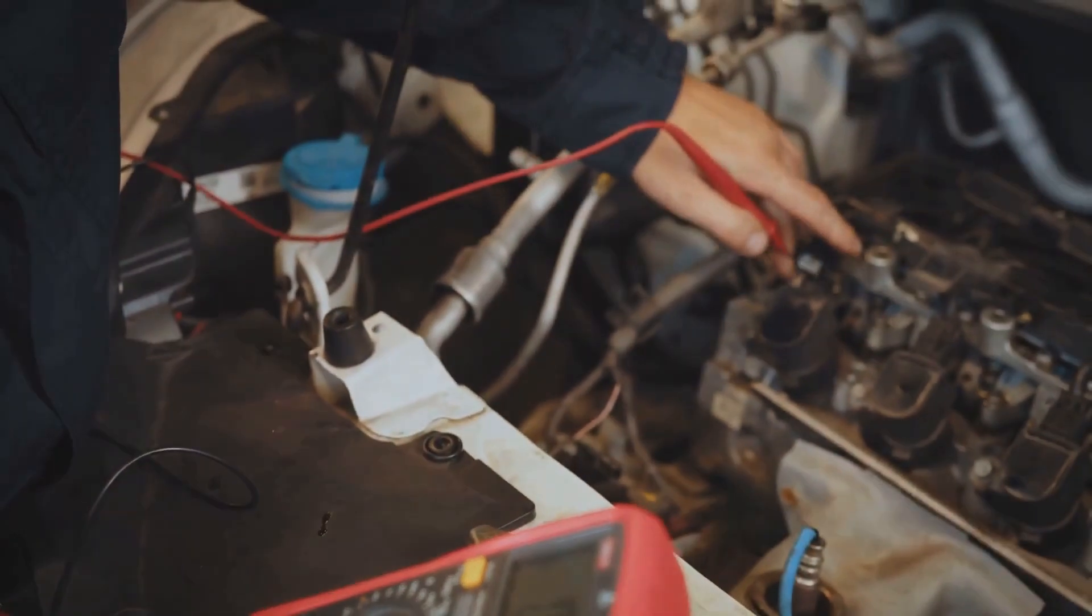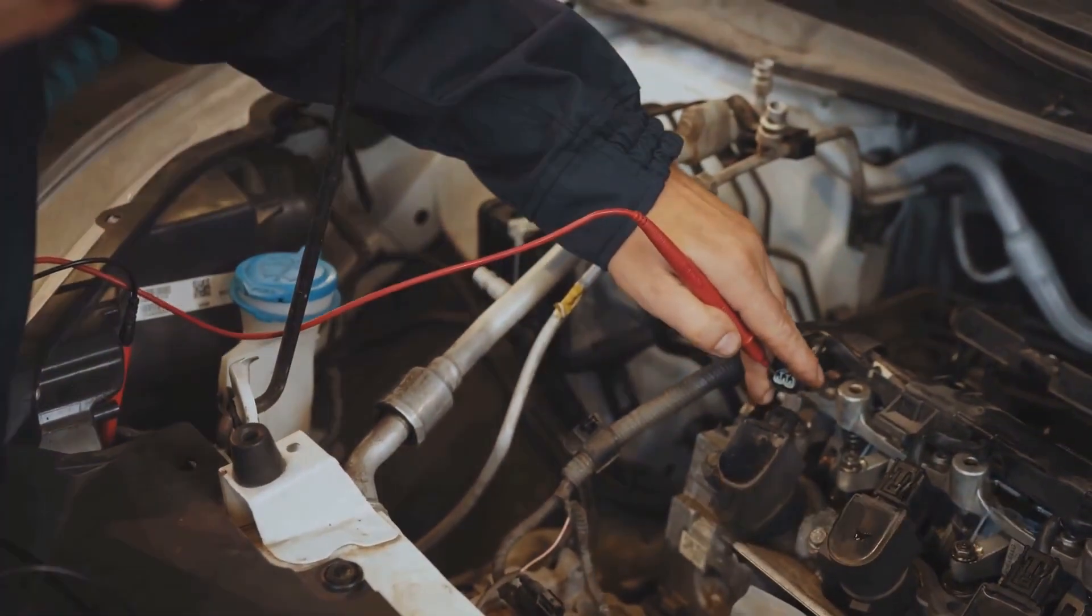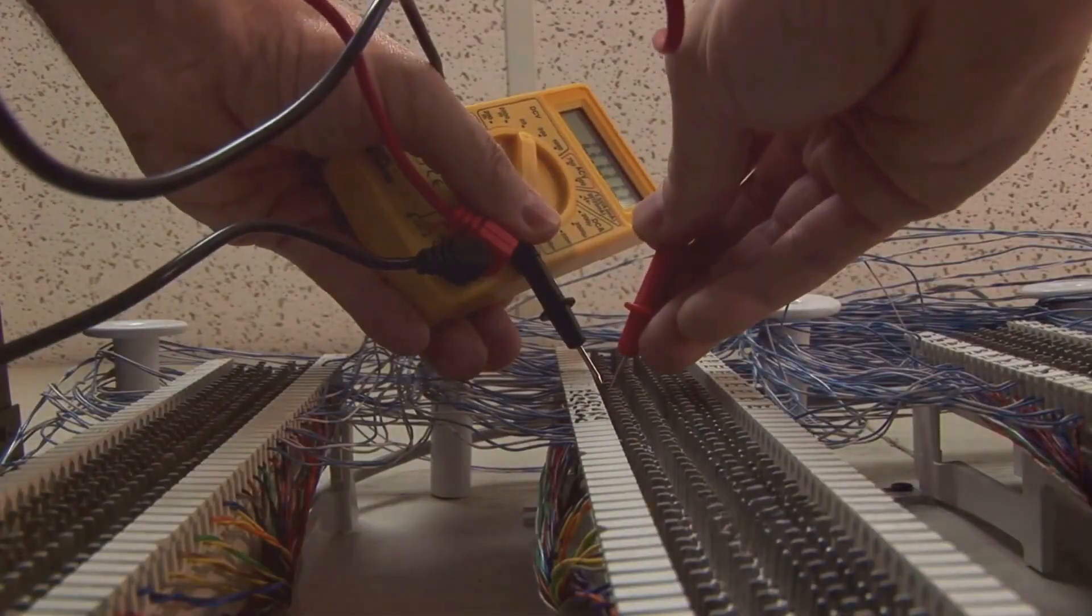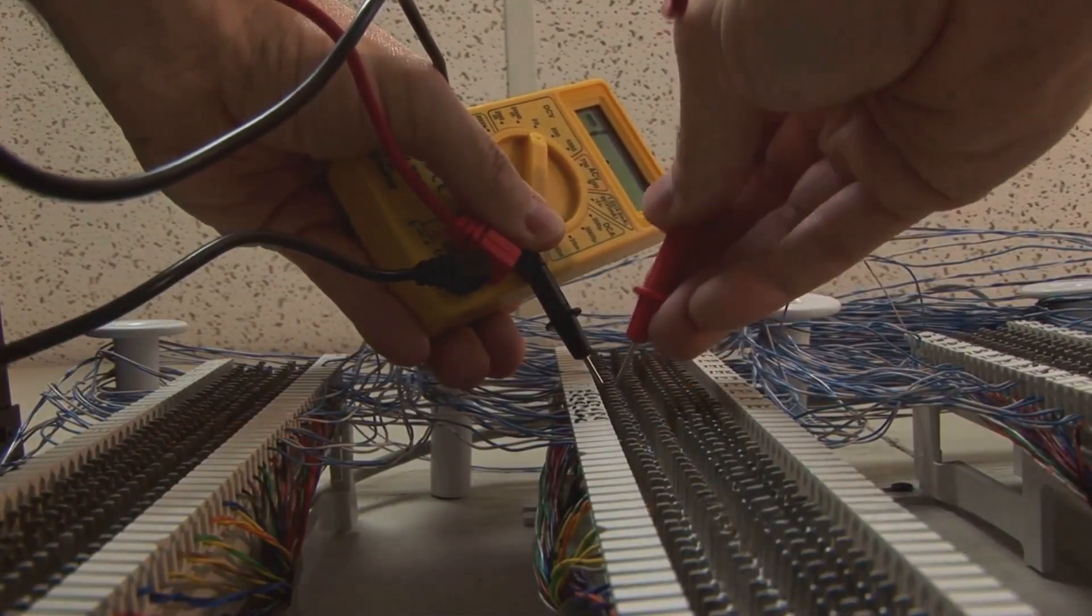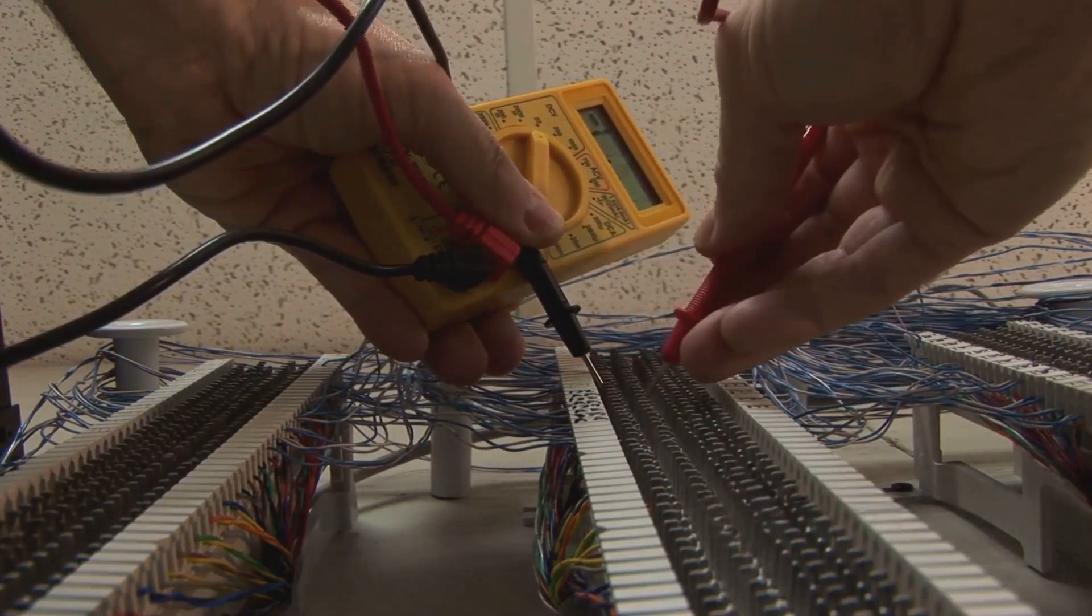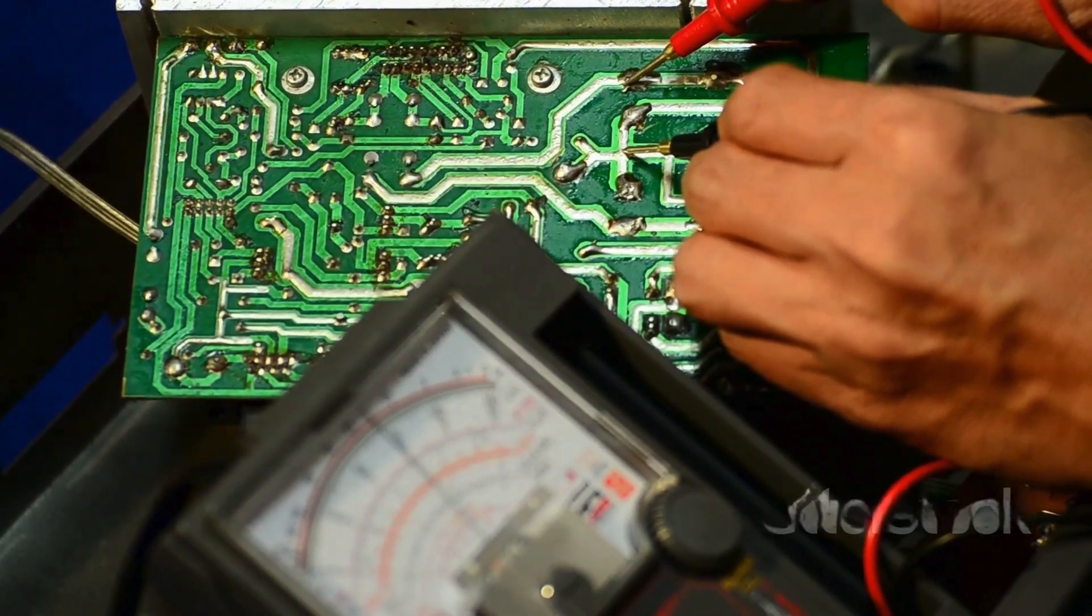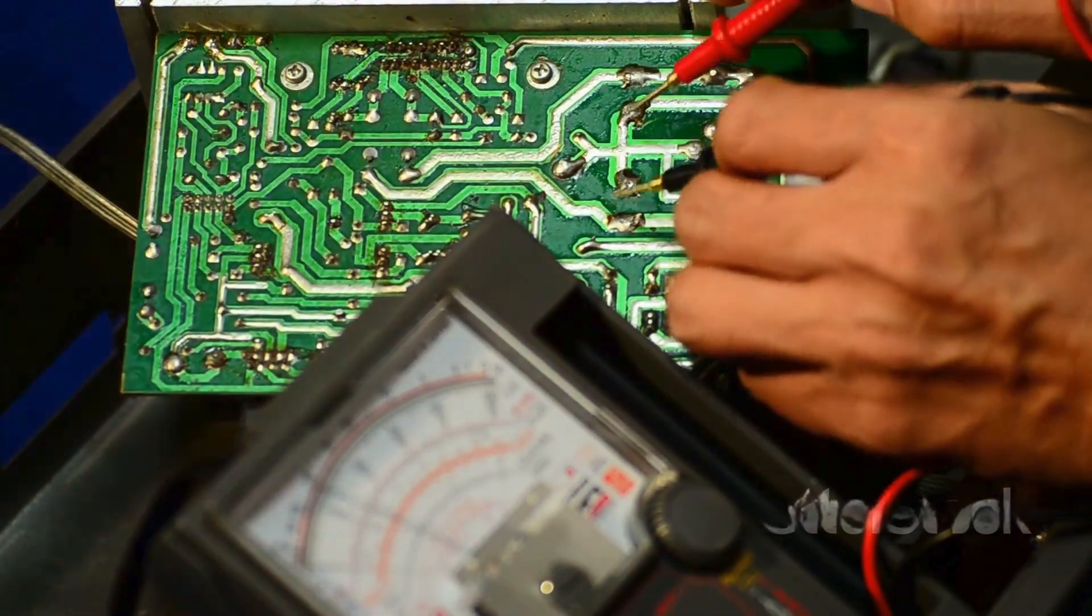Step 2: Inspect the fuses. Fuses are critical components that protect your multimeter from electrical overloads. Most multimeters have internal fuses that protect against overloads. These fuses can blow if the multimeter is subjected to too much current. To access them, remove the back cover again. Be gentle to avoid damaging any internal components.